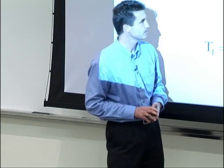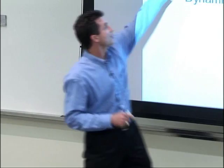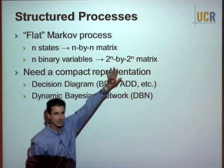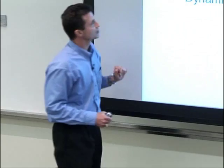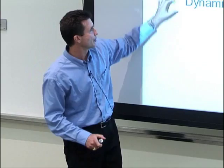The other problem shows up in structured systems. If you have n binary variables, you need a 2^n by 2^n matrix for a discrete time Markov system. You need a compact representation — decision diagrams have been used in computer science, while dynamic Bayesian networks (DBNs) are more common in machine learning and AI.